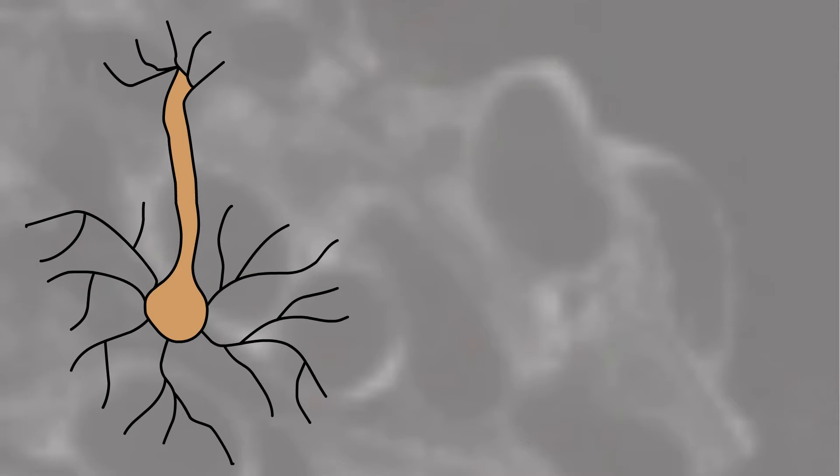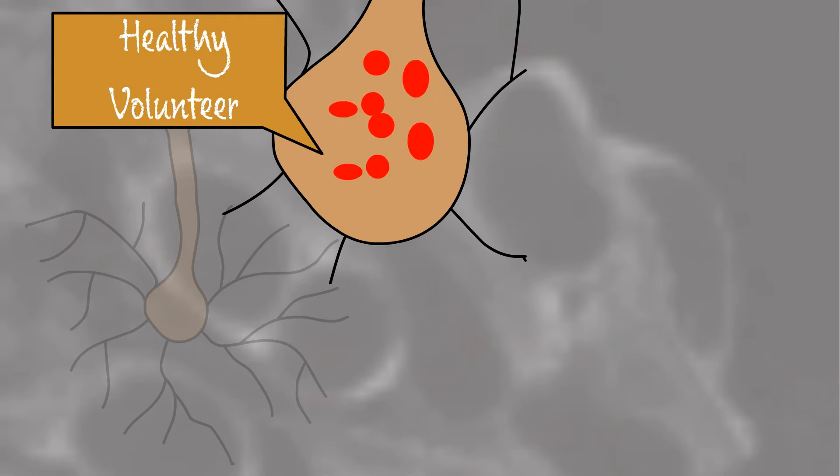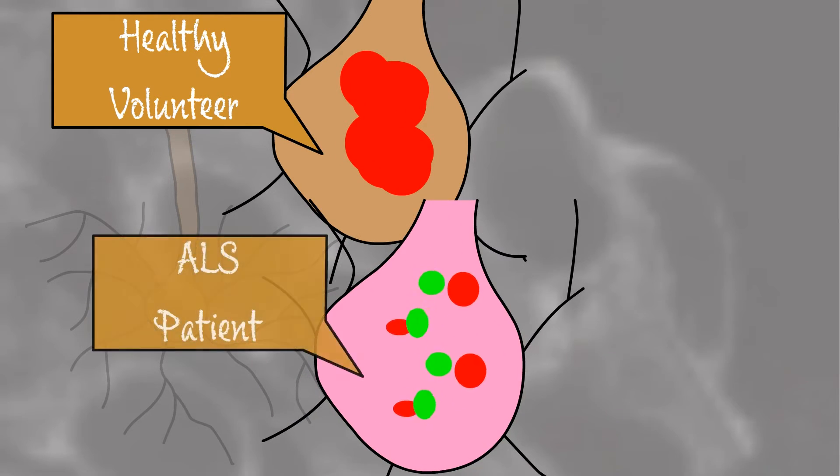Next, we wanted to understand why the ALS motor neurons were dying. One feature of ALS is accumulation of proteins in dense cytoplasmic granules. To study this, we took advantage of the natural stress response that all cells have. When exposed to stress like radiation, heat, or chemicals, cells assemble cytoplasmic granules called stress granules. We challenged iPSC-derived motor neurons with toxic chemicals to simulate environmental stress. We looked for HNRNP A2B1 in the stress granules. We found that cells from ALS patients, but not healthy volunteers, had HNRNP A2B1 depicted in green in their stress granules.